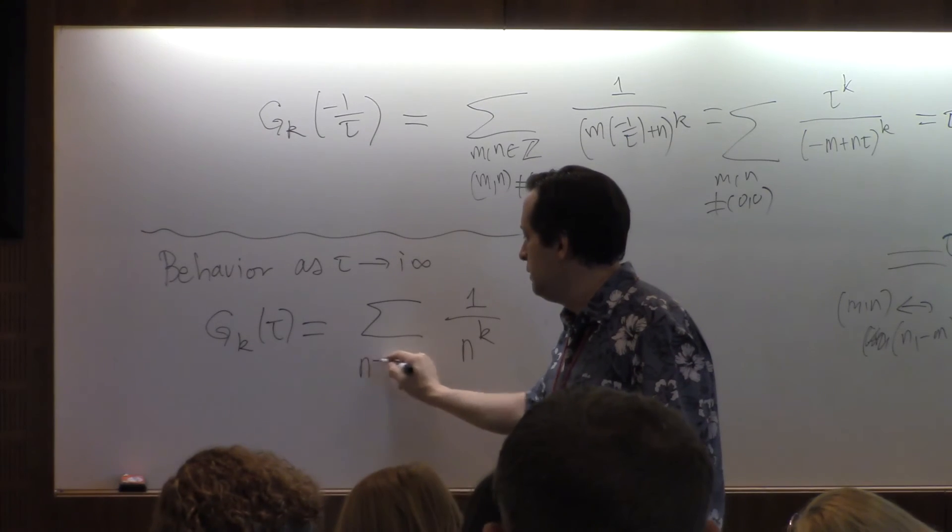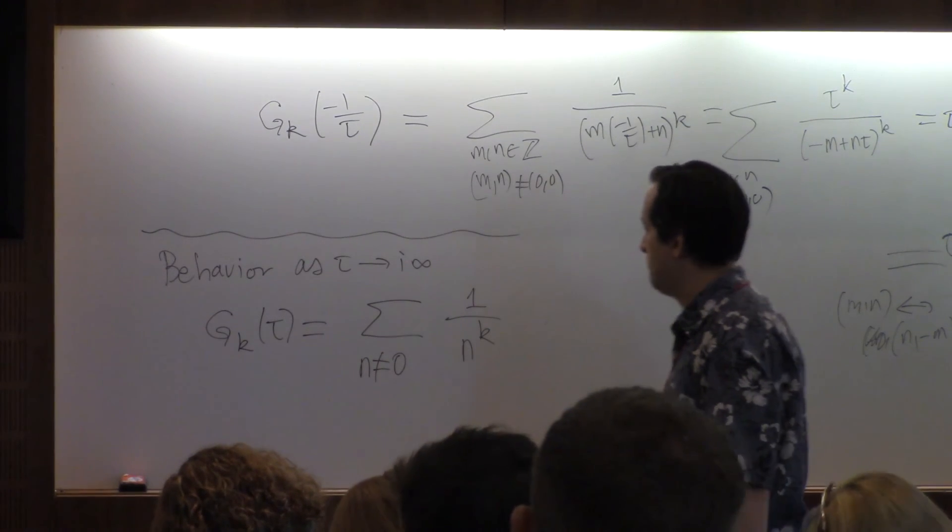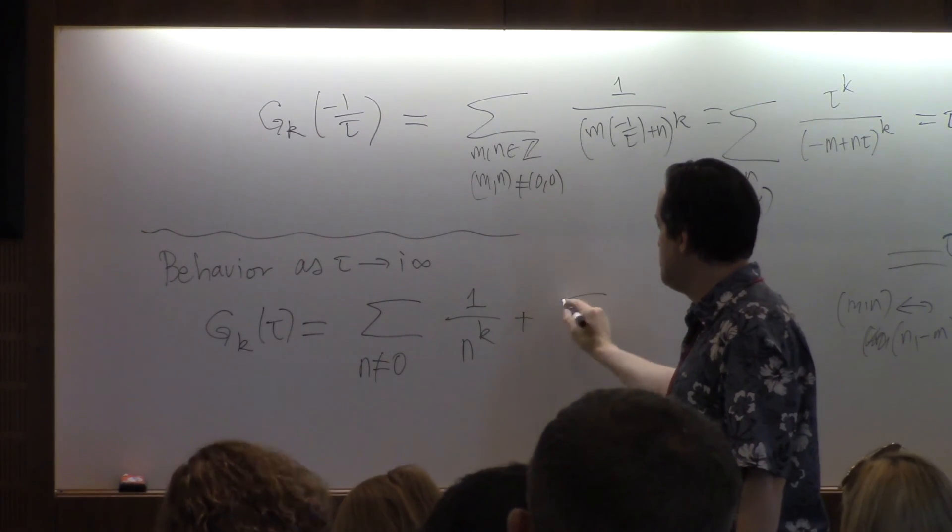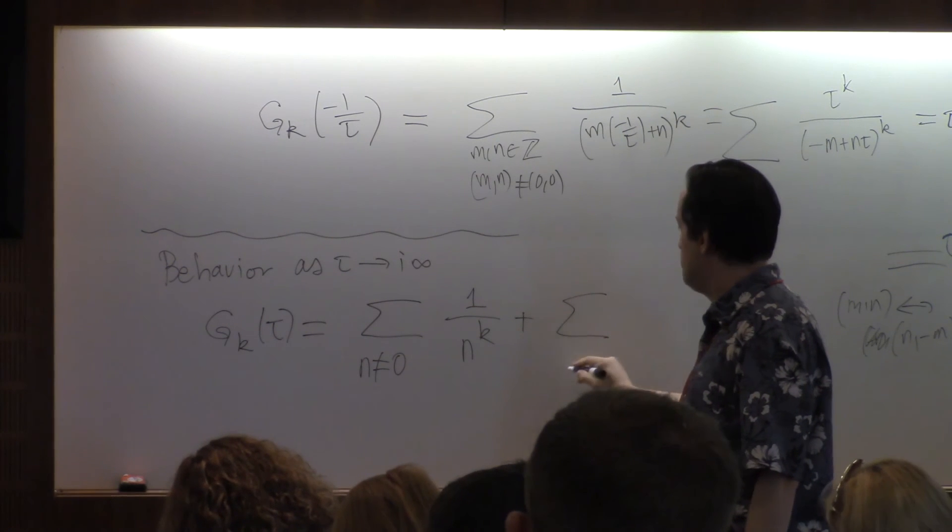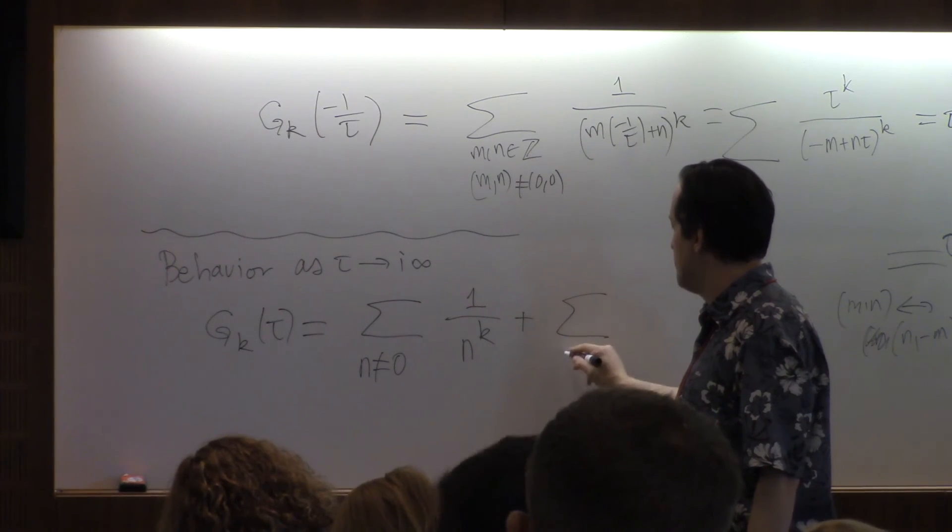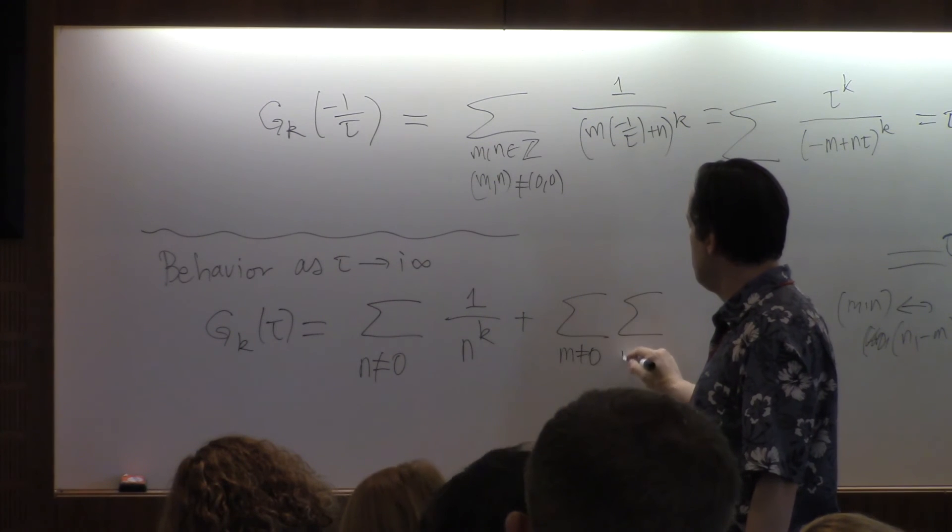If n is 0, then n cannot be 0, and then we have the sum where n is not 0, and then n can be anything at all.